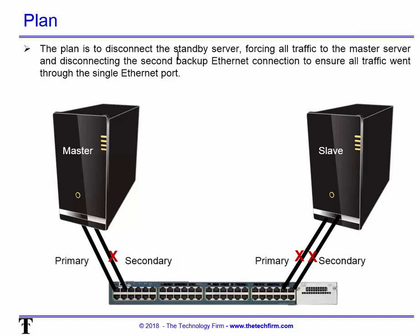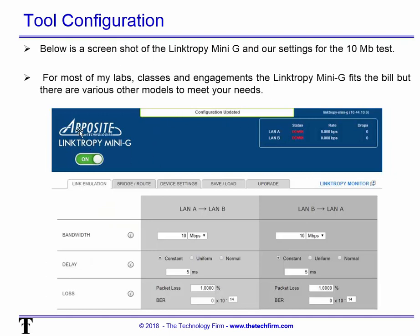The plan was to disconnect the standby server — the slave — and force all traffic to the master. The master had two ethernet ports, a primary and secondary. We wanted to unplug the ethernet connections on the slave and unplug the secondary ethernet connection on the master, so we know all the data goes through the primary link. Then we configure our WAN emulator — this is the Apposite LinkTropy Mini G — it's 10, 100, and gig. You can configure bandwidth, delay, and packet loss. These three variables impact speed and performance. A simple example is to do a ping with a specific packet size to get delay values.